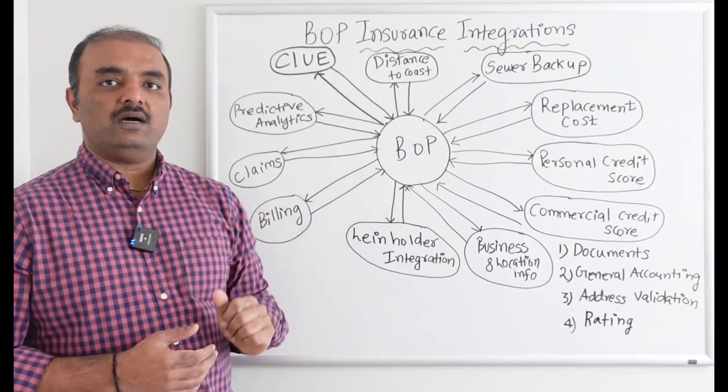Business and location info integration: once you enter basic information about your business, this integration tells you how many locations the business has and what kind of business they operate. It helps verify that the customer-provided information matches available data in the market.